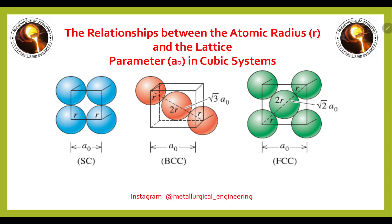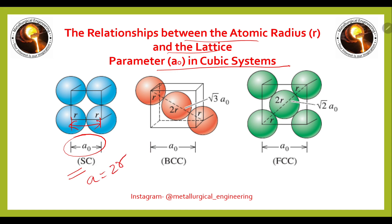Now we will see the relationships between atomic radius and lattice parameter in cubic systems. For simple cubic, a₀ is the distance between two atomic centers and the relation is a = 2r. The example for simple cubic is polonium — it is the only example.